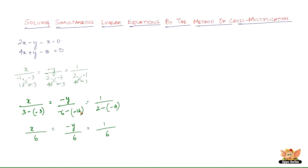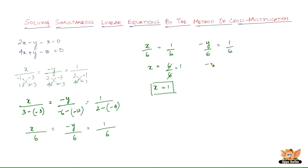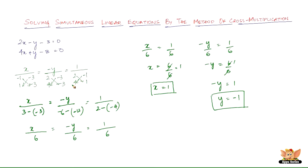So we have x divided by 3 minus of minus 3, which is 3 plus 3 = 6. Minus y divided by minus 6 minus of minus 12, which is minus 6 plus 12 = plus 6. Equal to 1 divided by 6. To find x: x divided by 6 equals 1 divided by 6, so x equals 1. For y: minus y divided by 6 equals 1 divided by 6, giving minus y equals 1, so y equals minus 1. We have successfully solved the equations and found x = 1 and y = −1.